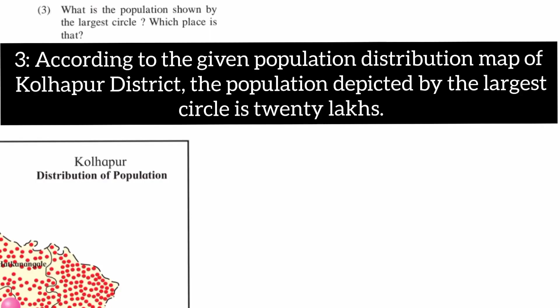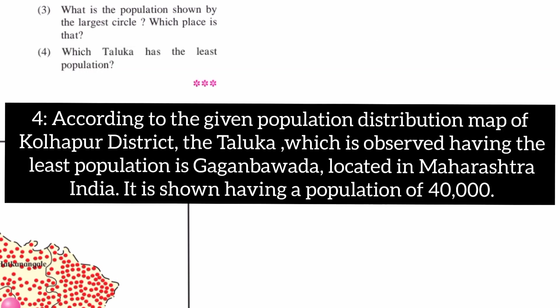Third: what is the population shown by the largest circle, and which place is that? Fourth: which taluka has the least population?